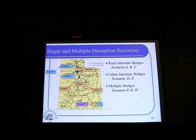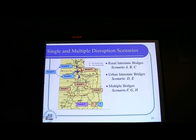We come up with different scenarios. One is the rural interstate bridge scenario, where we select stops in several areas. In the rural interstate, when the disruption happens, you may not be able to find alternative routes.